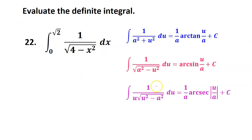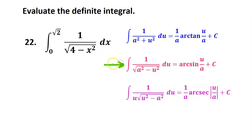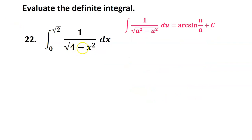Here are the three formulas that you need to memorize. Which one do you think we will use for this problem? I see that we have the square root, which means it's not going to be the arctangent formula. I see that we have a constant minus the variable, and in the arcsine rule we have the constant minus the variable. So it's probably going to be this one — in fact, this is such a perfect match that we won't even need u-substitution.